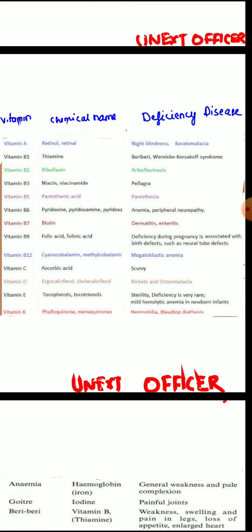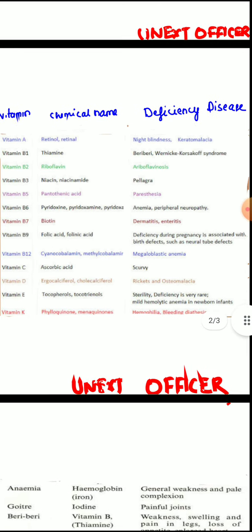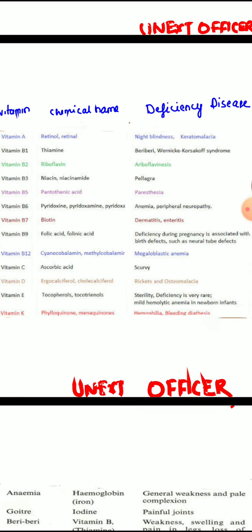About vitamin B1: thiamine deficiency causes a disease called beriberi, which is of two types. Wet beriberi involves the cardiovascular system and dry beriberi involves the nervous system. Thiamine deficiency is mainly seen in alcoholics, and in them it causes Wernicke-Korsakoff syndrome, characterized by confusion, amnesia, vision changes, double vision, and loss of muscle coordination, which is called ataxia.